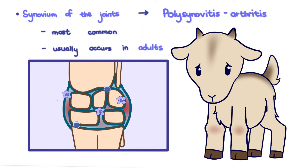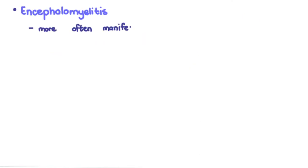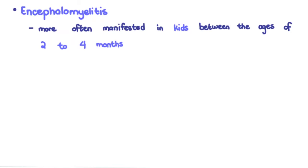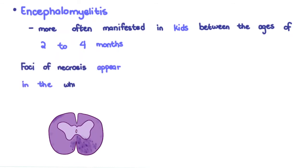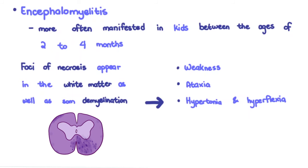This makes the joint appear distended and the goat may be lame. The encephalomyelitis is more often manifested in kids between ages 2 to 4 months, though occurrence in older kids and goats has been described. Foci of necrosis appear in the white matter as well as some demyelination. This results in various nervous signs such as weakness, ataxia, hypertonia, and hyperreflexia, which may progress to paresis in some or all the limbs, and paralysis.